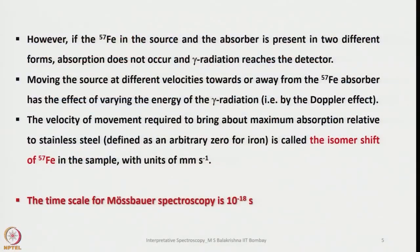However, if the 57Fe in the source and absorber is present in two different forms, absorption does not occur and gamma radiation reaches the detector. Moving the source at different velocities towards or away from the absorber varies the energy of the gamma radiation — this is called the Doppler effect. The velocity required to bring about maximum absorption relative to stainless steel is called the isomer shift of 57Fe in the sample, with units of millimeters per second. The timescale for Mössbauer spectroscopy is 10⁻¹⁸ seconds.